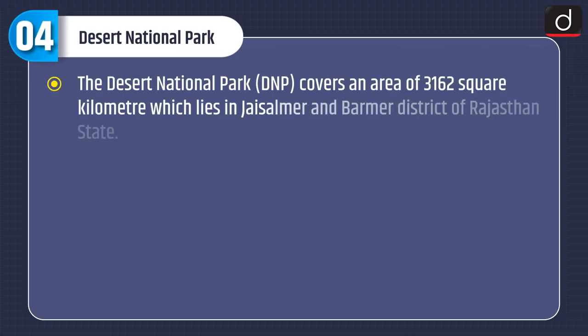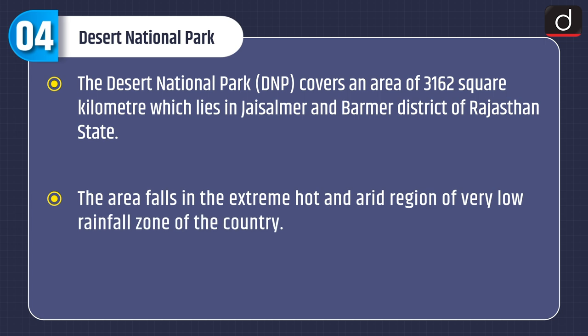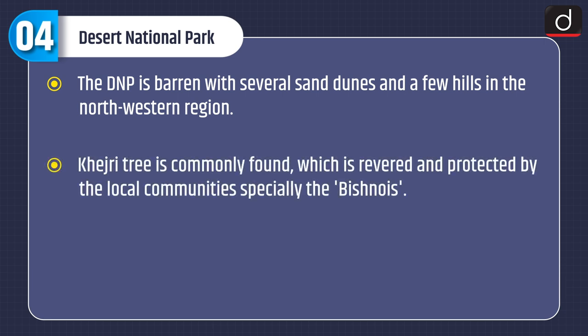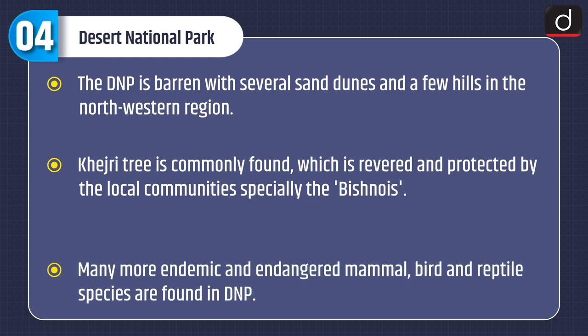Now let's discuss about Desert National Park. The Desert National Park covers an area of 3,162 square km, lying in Jaisalmer and Barmer districts of Rajasthan state. The area falls in the extreme hot and arid region of very low rainfall zone of the country. DNP was gazetted in the year 1980. The DNP is barren with several sand dunes and a few hills in the northwestern region. Khejri tree is commonly found, which is revered and protected by local communities, especially the Bishnois. Many endemic and endangered mammal, bird and reptile species are found in DNP.